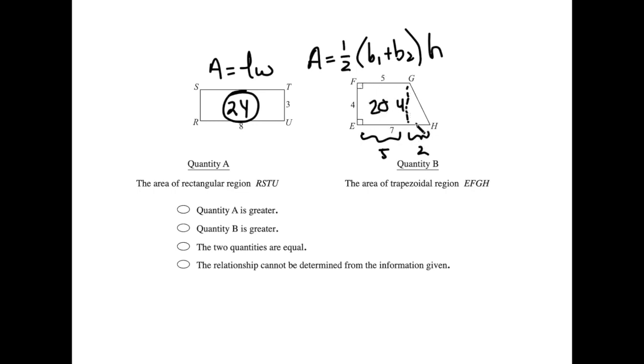And then this is a right triangle, so base times height divided by 2. 2 times 4 divided by 2 gives us 4. So 20 and 4 added together makes 24. Would you look at that? They're equal to each other.